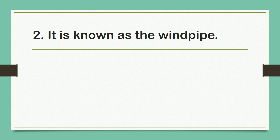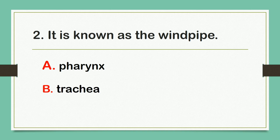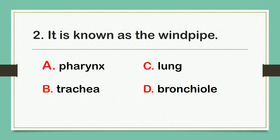It is known as the windpipe. Letter A. Pharynx. Letter B. Trachea. C. Lung. Or letter D. Bronchiole. And the correct answer is letter B: Trachea.